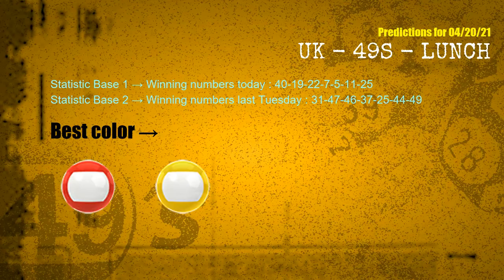According to the statistics above, with winning numbers today — 40, 19, 22, 07, 05, 11, 25 — and winning numbers last Tuesday — 31, 47, 46, 37, 25, 44, 49 — the frequent following colors are red and yellow.